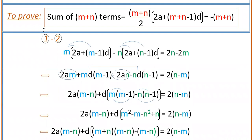Now if you expand this equation: multiply through to get 2am plus md into m minus 1, minus 2an, minus nd into n minus 1, which equals 2 into n minus m. Grouping: 2a is common in the first two terms giving 2a into m minus n, and d is common giving d into m into m minus 1 minus n into n minus 1, equal to 2 into n minus m.